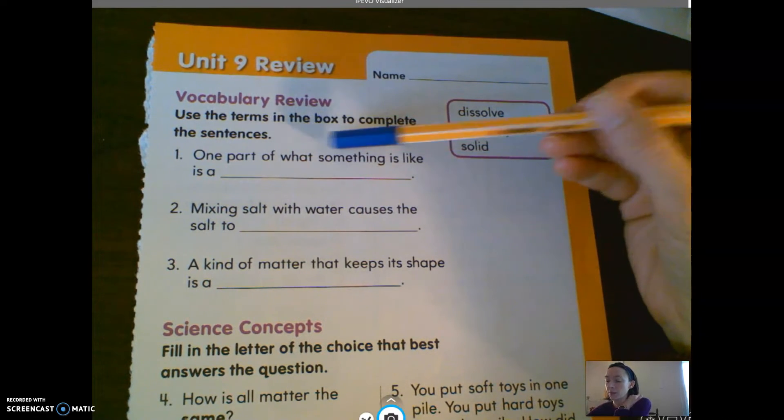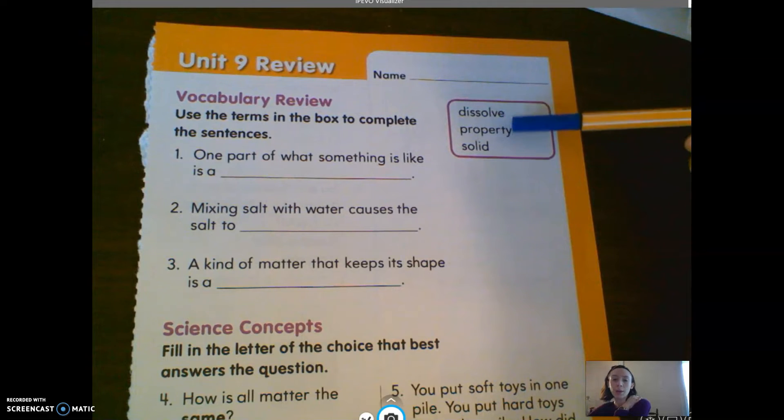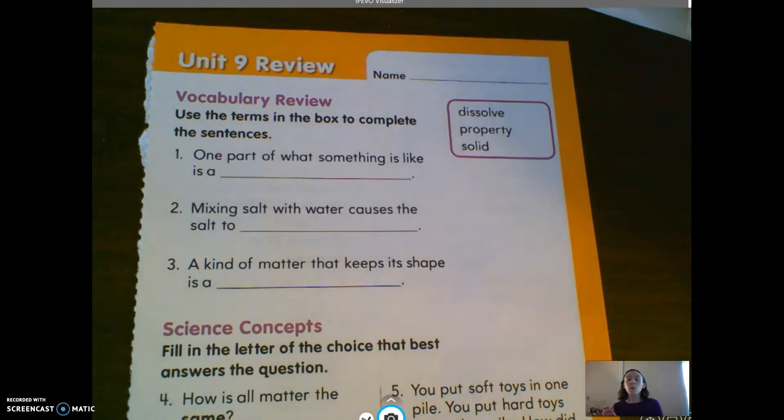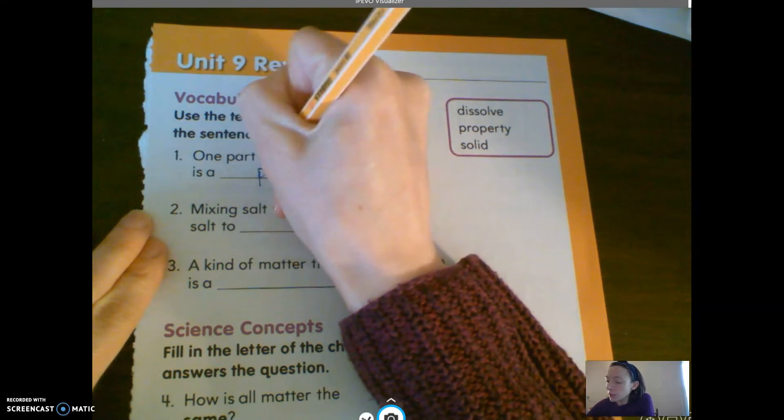Number one: one part of what something is like is a, would that be a dissolve, a property, or a solid? Well, one part of what something is like would be a property, like the color or size or shape. So on number one we're going to write property.